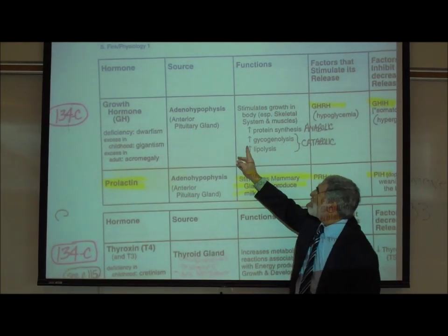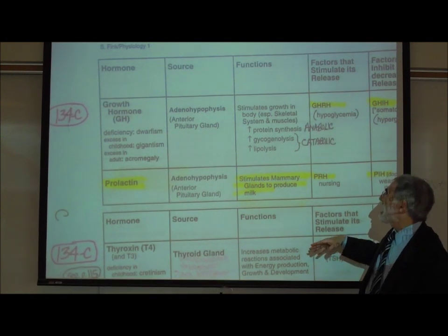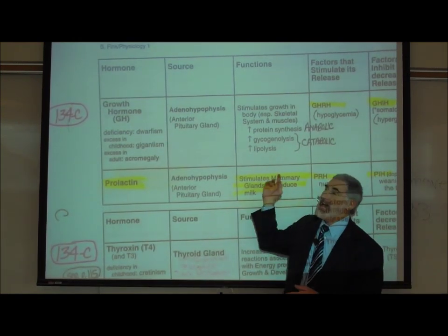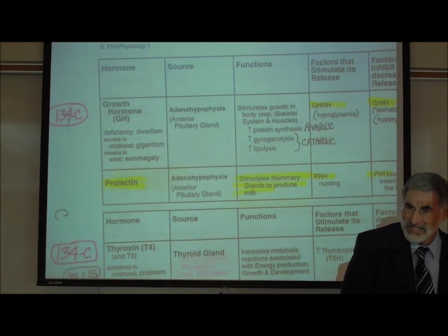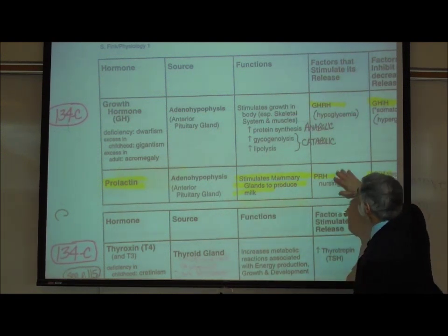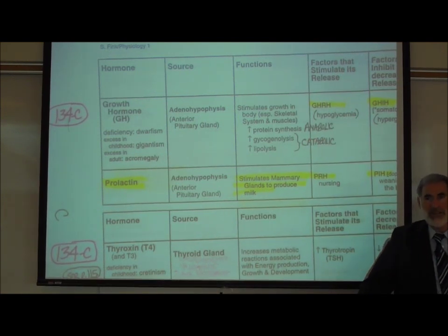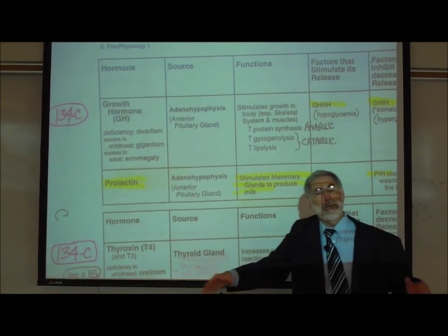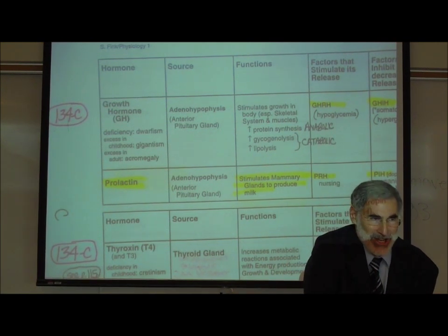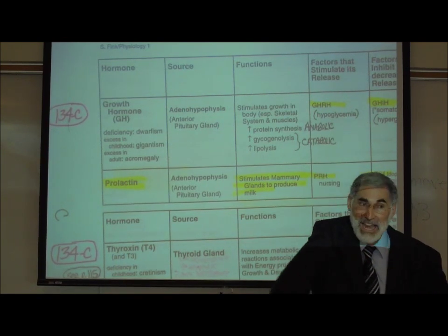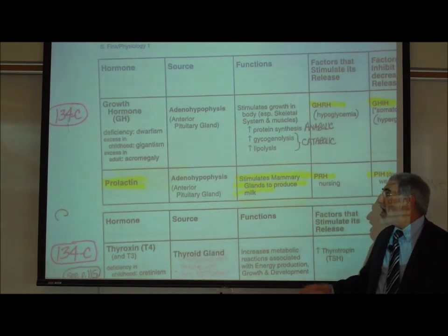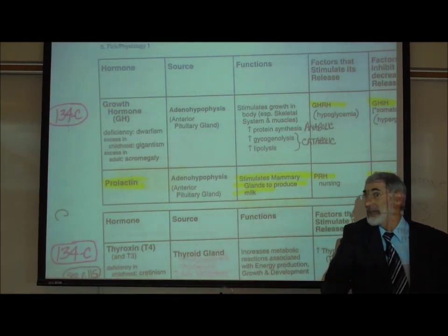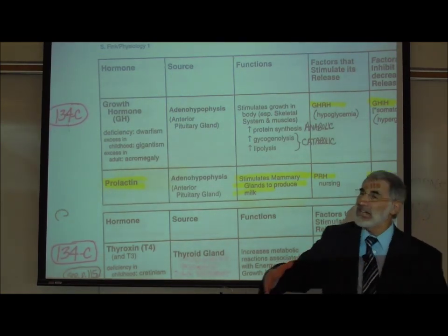But you'll notice the growth hormone causes glycogenolysis and lipolysis. Glycogenolysis is the breakdown of glycogen into glucose, so that glucose can be used as a source of energy. And it causes lipolysis, the breakdown of triglycerides into fatty acids, so that fats can be used for energy. So we see that growth hormone is anabolic and catabolic. It's not the only one. Thyroxin was anabolic and catabolic. The way that I interpret this is that growth hormone basically wants you to use carbs and fats for energy and not use proteins for energy. It actually wants you to make proteins.